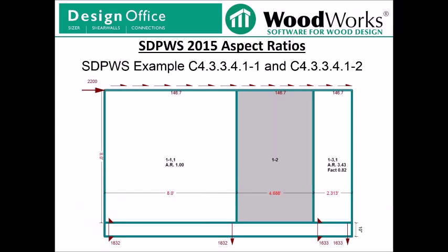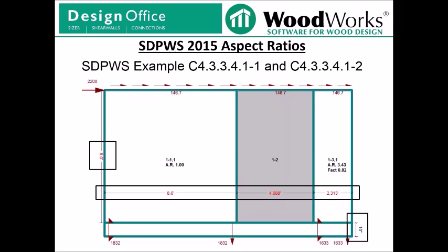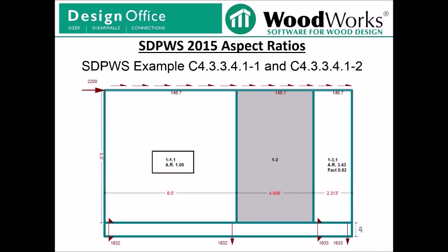Here is an elevation view of a shear line in ShearWalls 11. The segment specified as non-shear is grayed out in elevation view to indicate it is not included in the shear analysis. We now report the dimensions in elevation view, including wall height, segment length, and depth of the diaphragm. We also report the aspect ratio associated with each segment, and if there is a high aspect ratio segment, the aspect ratio factor is also reported. This factor is automatically changed when you toggle between deflection or capacity-based distribution. In the elevation view here, the aspect ratio factor is based on deflection-based distribution.